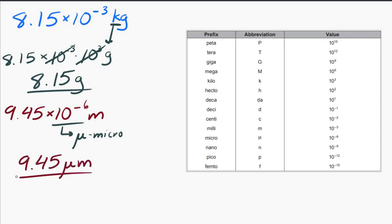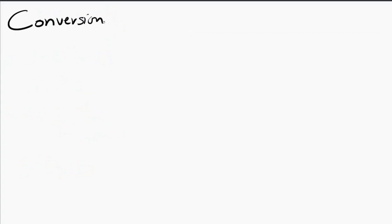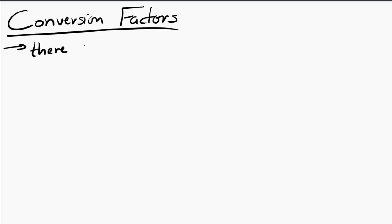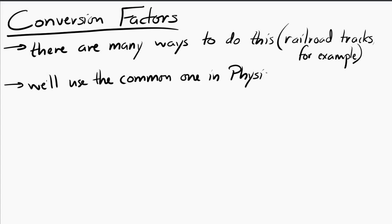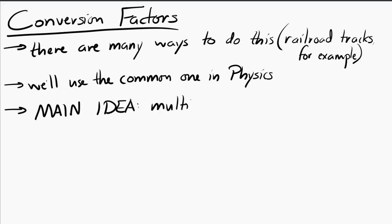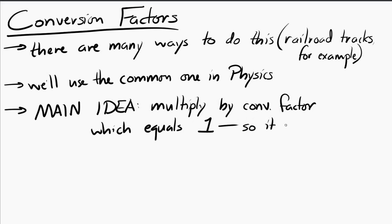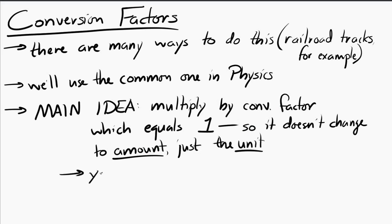If that method seemed a little ad hoc, it is. There is a more standardized way of dealing with metric prefixes, and that's conversion factors. There are many ways to deal with conversion factors — some teachers use railroad tracks, some use other methods. The most common approach, especially in future physics, is that you multiply by a conversion factor that must equal 1. This means it doesn't change the amount — it only changes the unit. The conversion factor is designed to annihilate the unit you don't want.